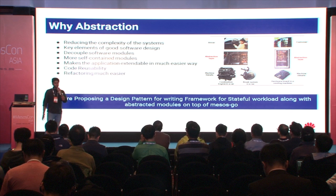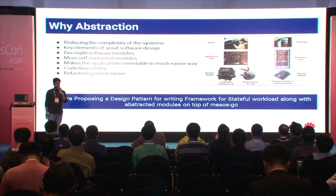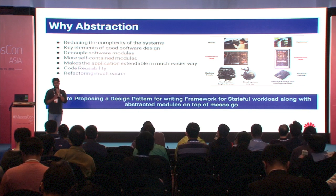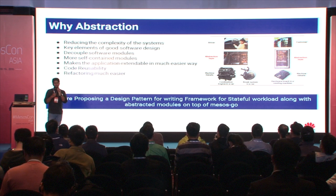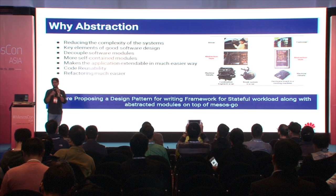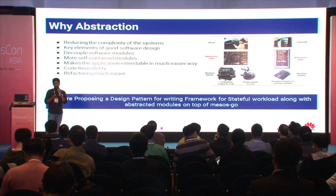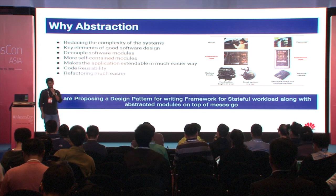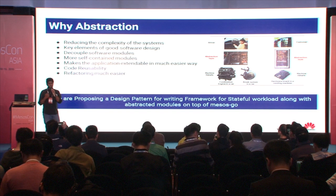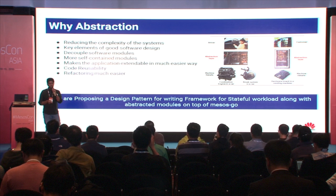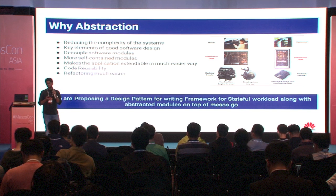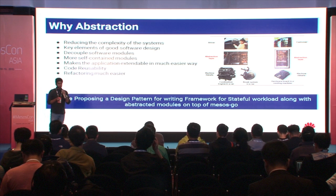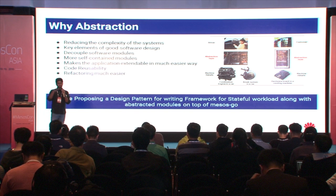We provide abstraction on the language binding. Abstraction is about solving a complex problem and providing a simple interface to the user, so they can easily use it to develop a framework. For example, when we sell a car, the user manual doesn't explain how the internal combustion engine works — it just gives you accelerator, brake, and clutch. What we are proposing is a design pattern for writing a framework for a stateful workload, along with abstraction provided on top of the Mesos scope.